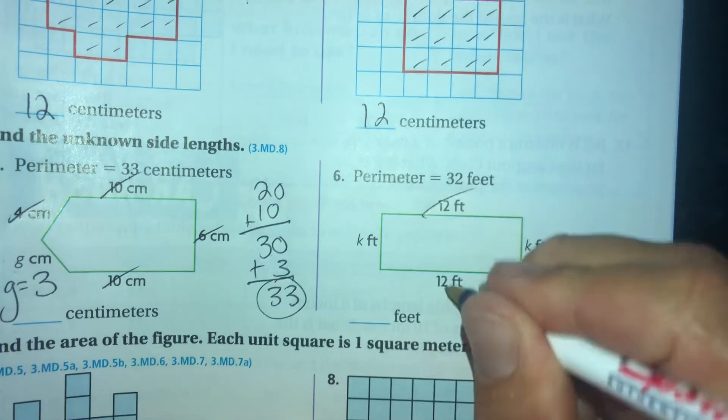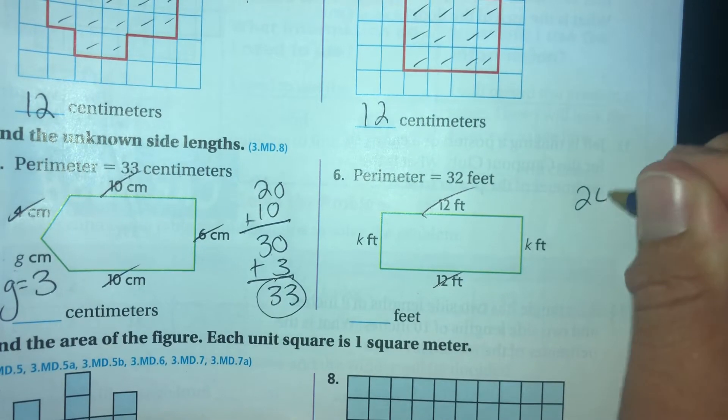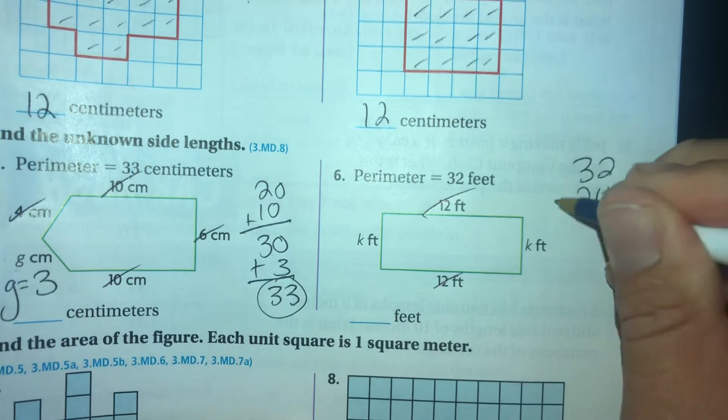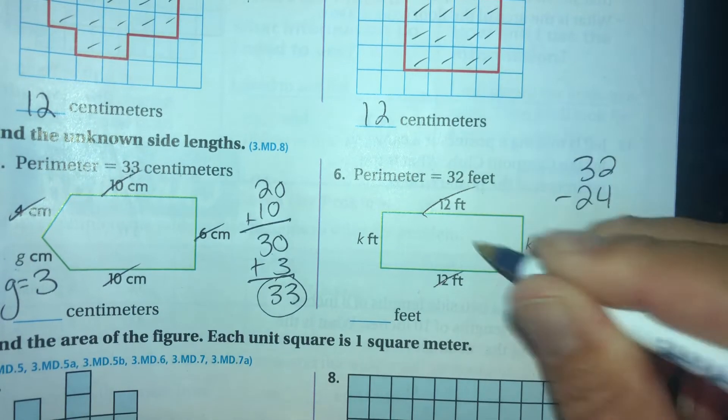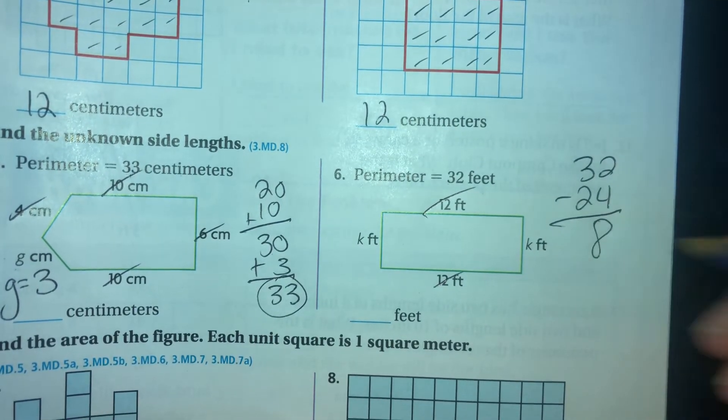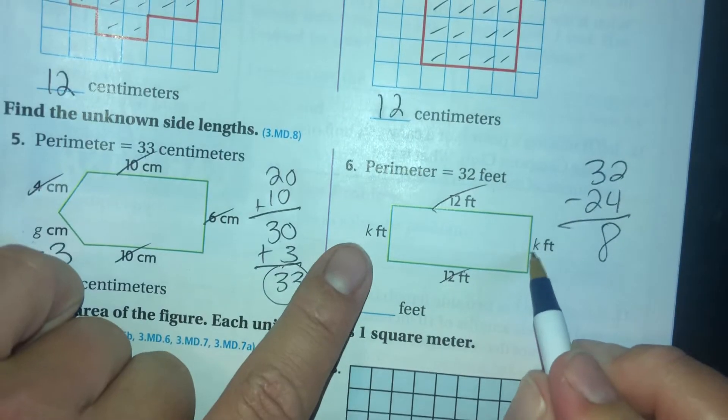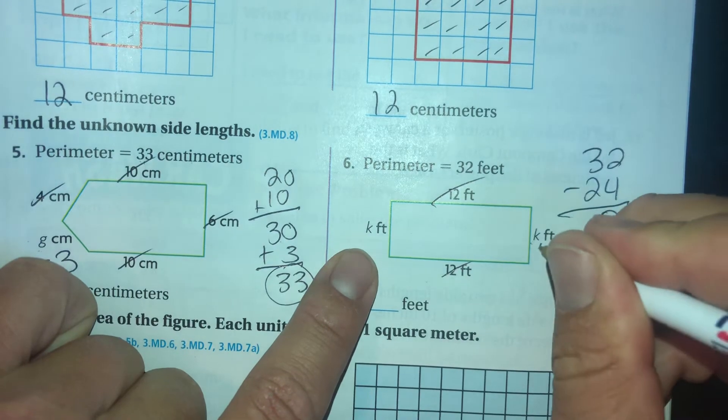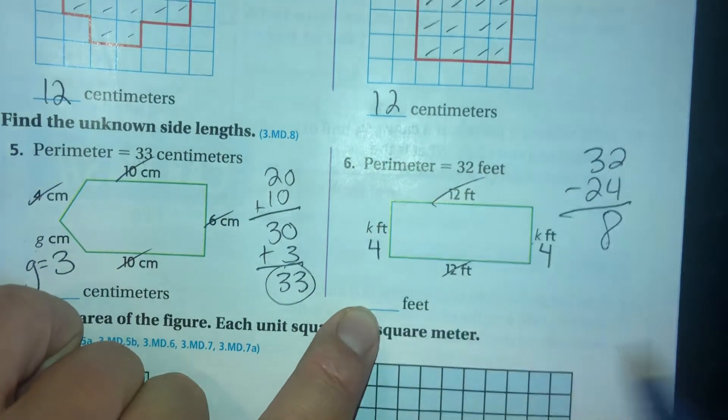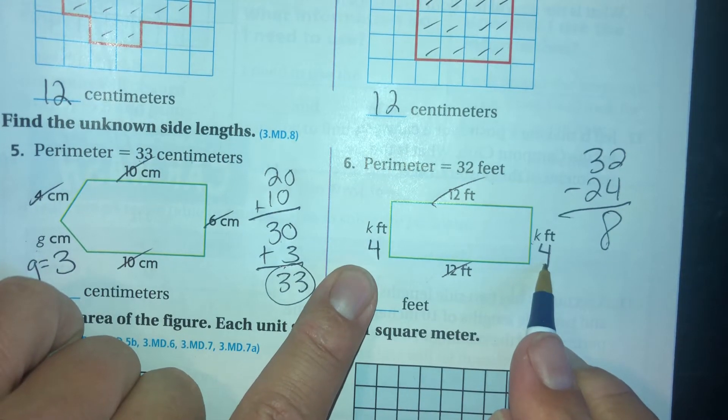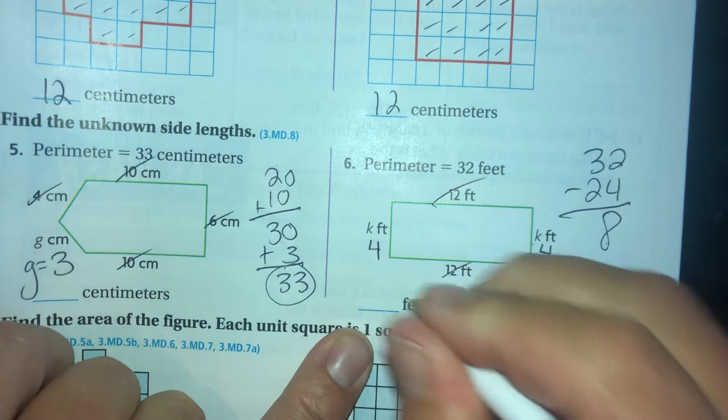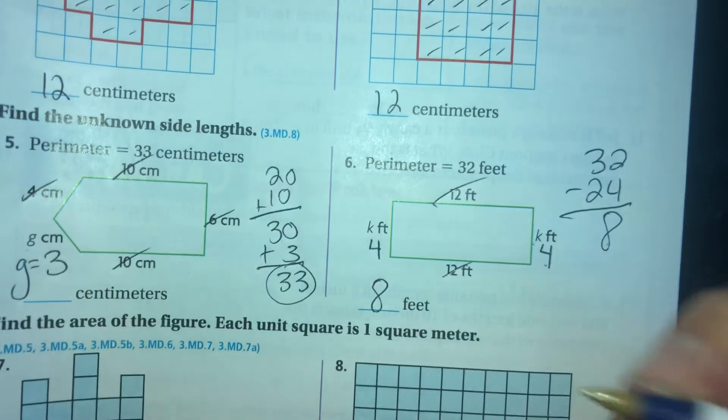Okay, the whole thing is 32. Let's see, 12 and 12 is 24. We know the whole thing is 32, so I'm going to find the difference between 24 and 32, which is 8. I have two sides, they're both equal length, and the total has to be 8. So if that's 4 and that's 4, that's both equal and the total is 8. That should work. So K equals 8 feet.